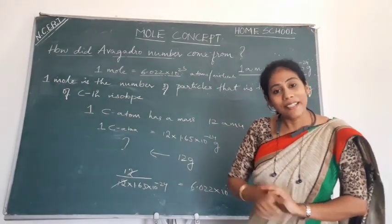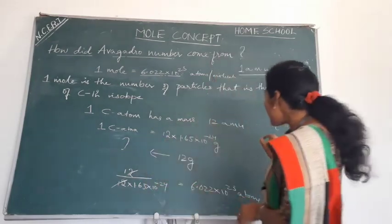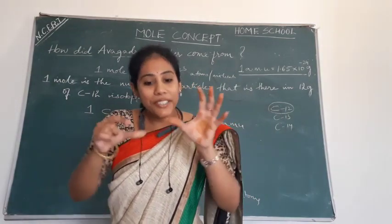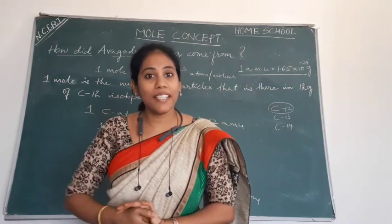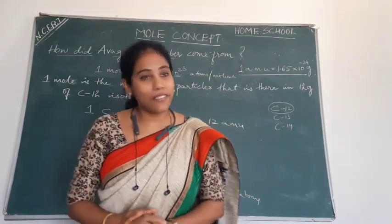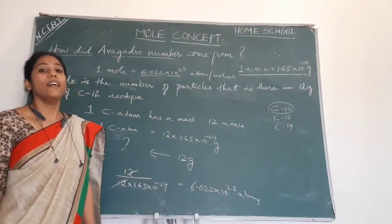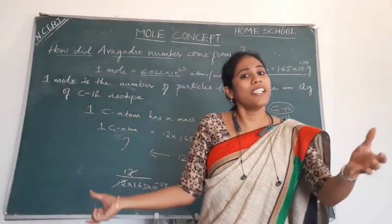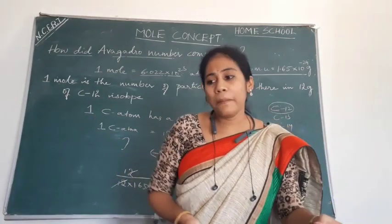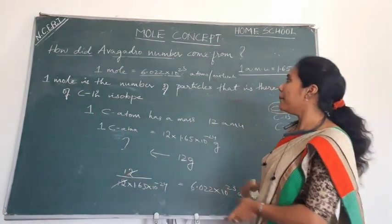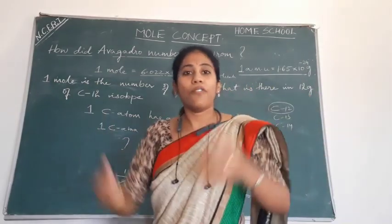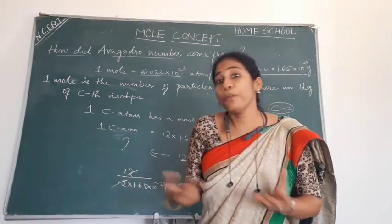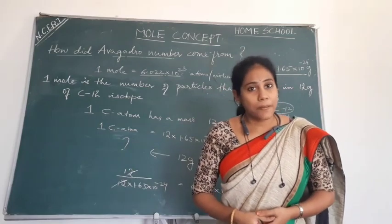Avogadro number is nothing but the number of particles in 12 grams of carbon-12 isotope. This is the reference number taken to call it a mole. This is how Avogadro number came from through calculations. Different scientists calculated it using various concepts and kept getting this same number, so they assumed one mole is this number. It was later proved true by various experiments.